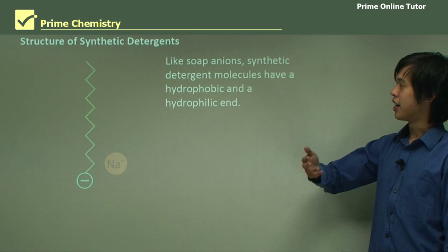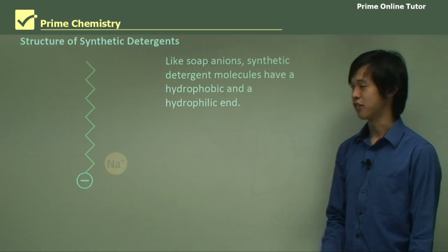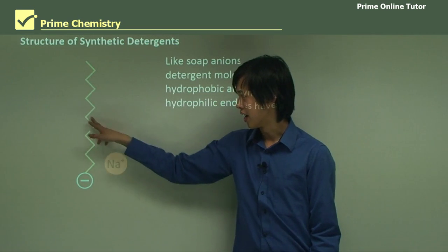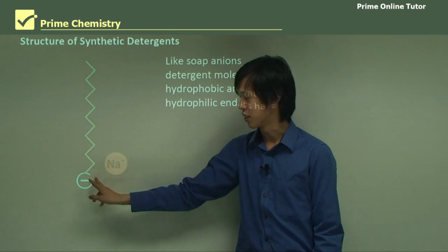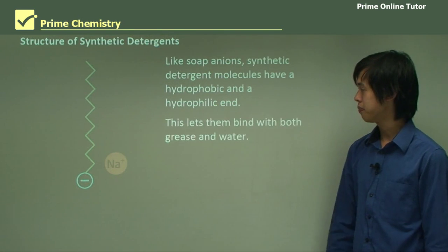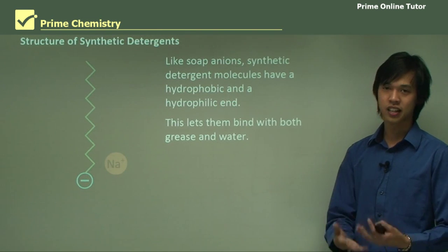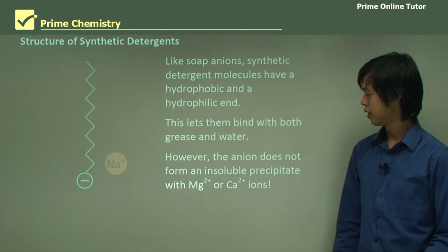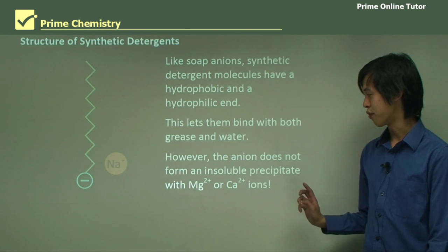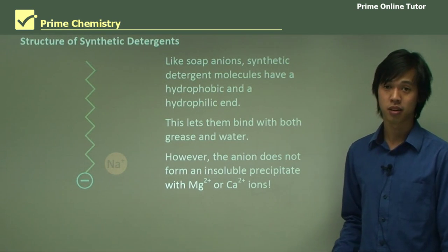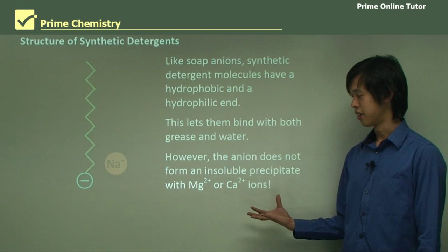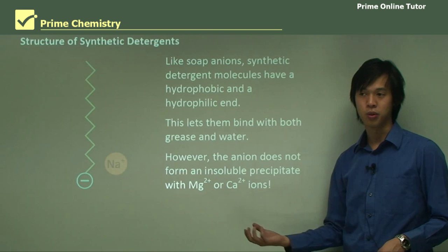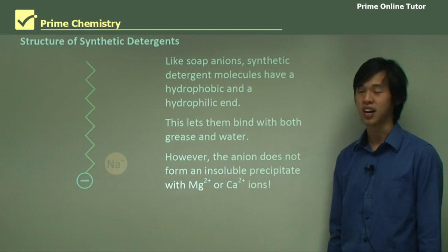Like soap anions, synthetic detergent molecules have a hydrophobic and a hydrophilic end — a water-hating region and a water-loving head — and the action is similar: it allows them to bind to both grease and water. However, the anion does not form an insoluble precipitate with magnesium or calcium ions, which means it doesn't form those precipitates and can work in hard water.